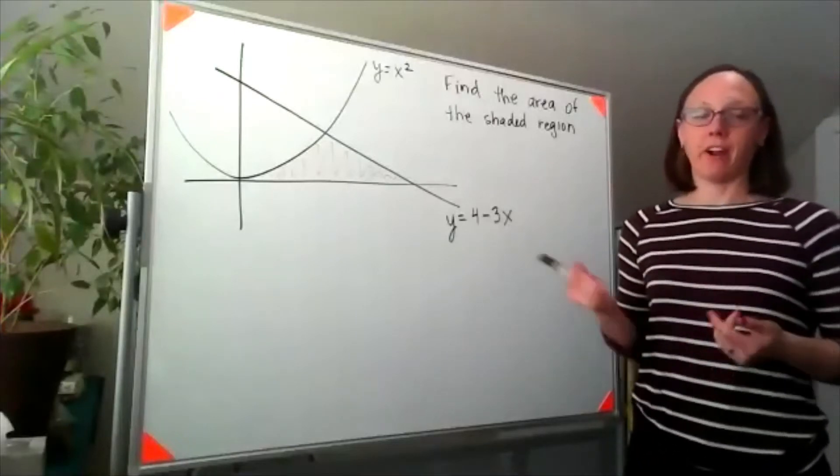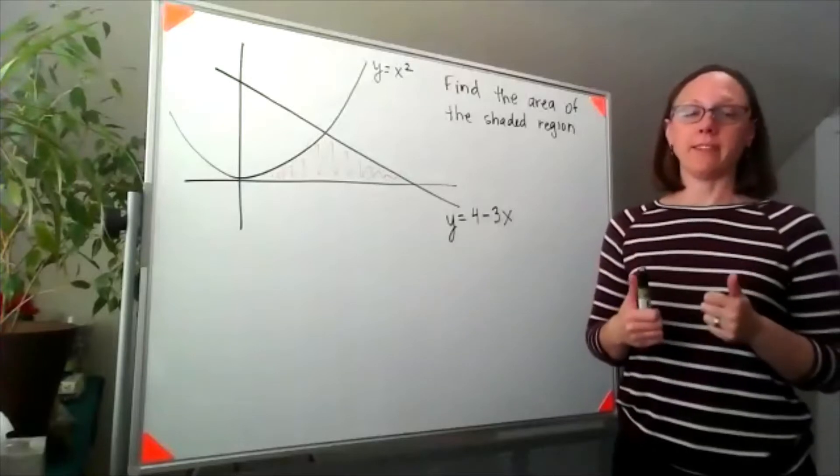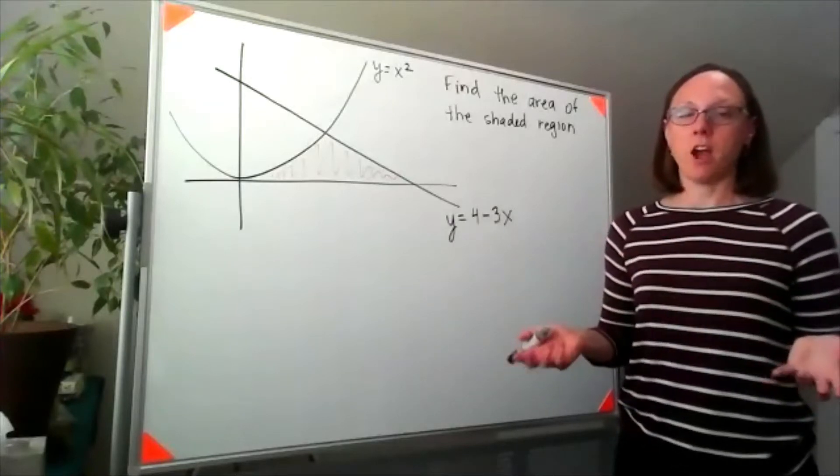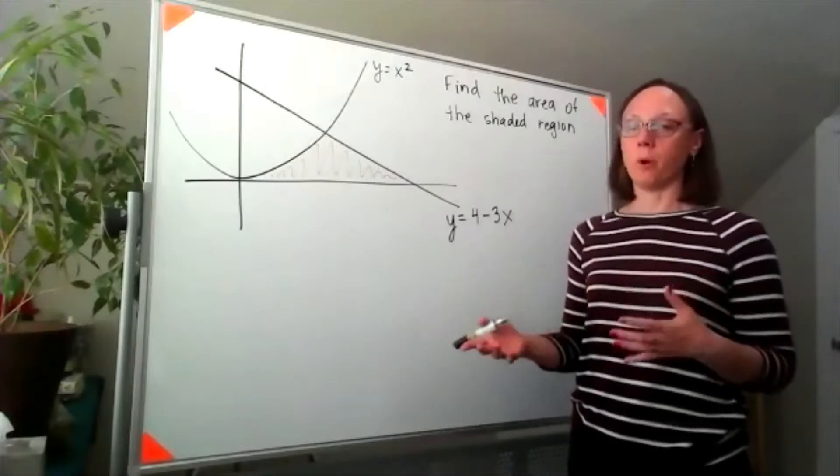We have two options for finding the area of this shaded region. Option one, we write this as two separate integrals. Option two, we write it as a single integral, and I want to go through both options.